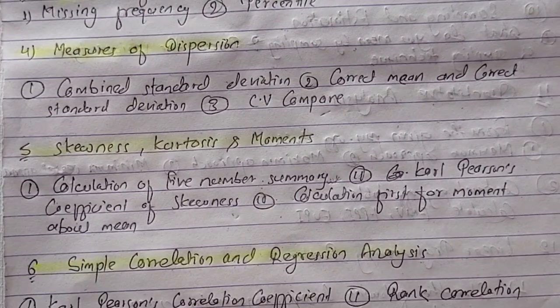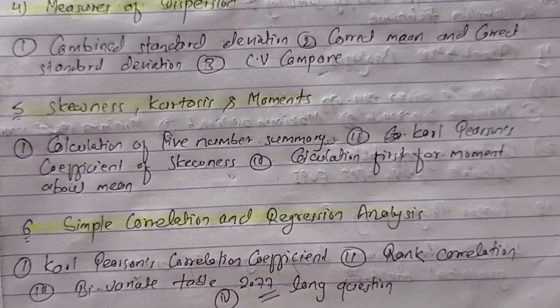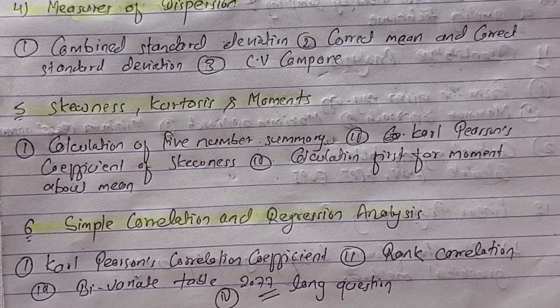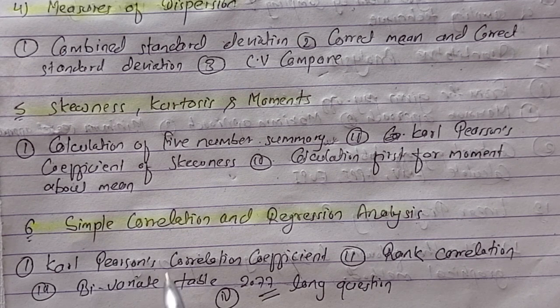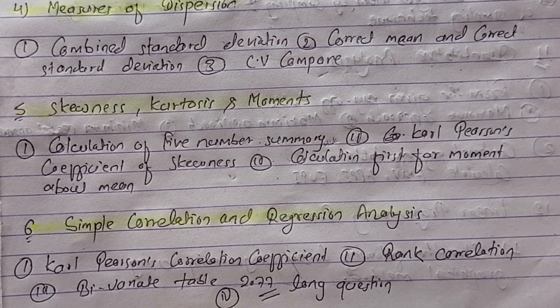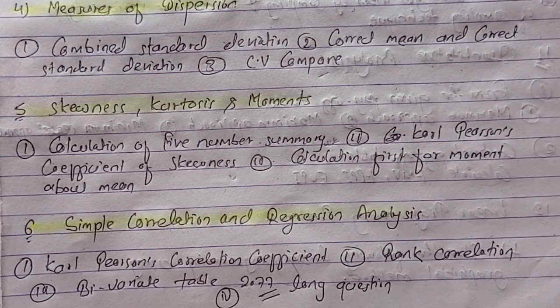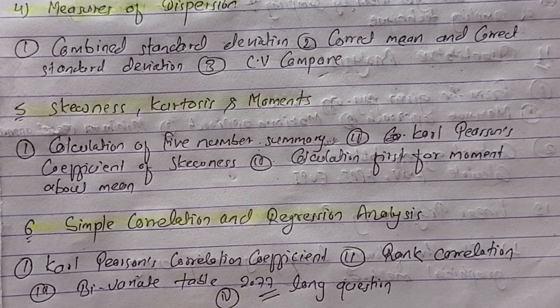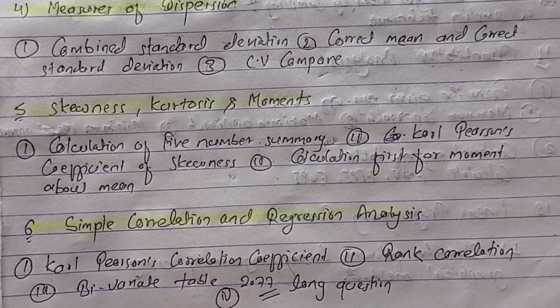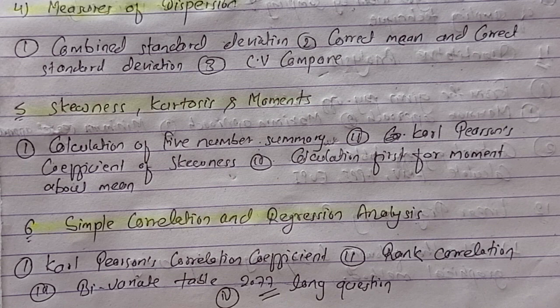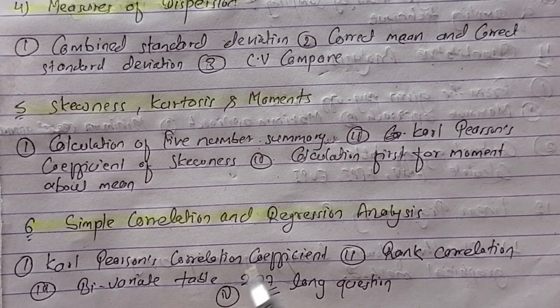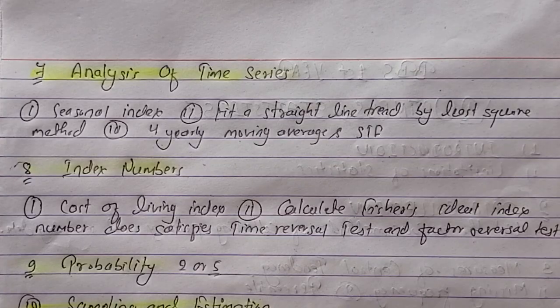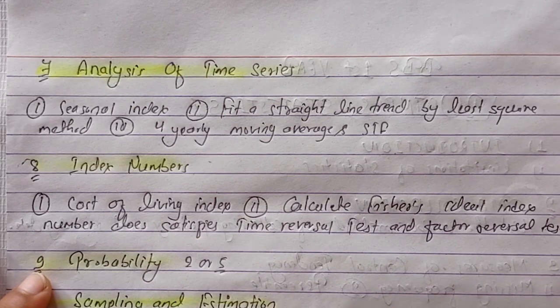The next chapter is simple correlation and regression. This question is worth 15 marks and you can get 10 marks in it. The questions will be about calculation of coefficient of correlation or rank correlation. I've already made videos on this, including bivariate table videos. You can find them in the playlist.